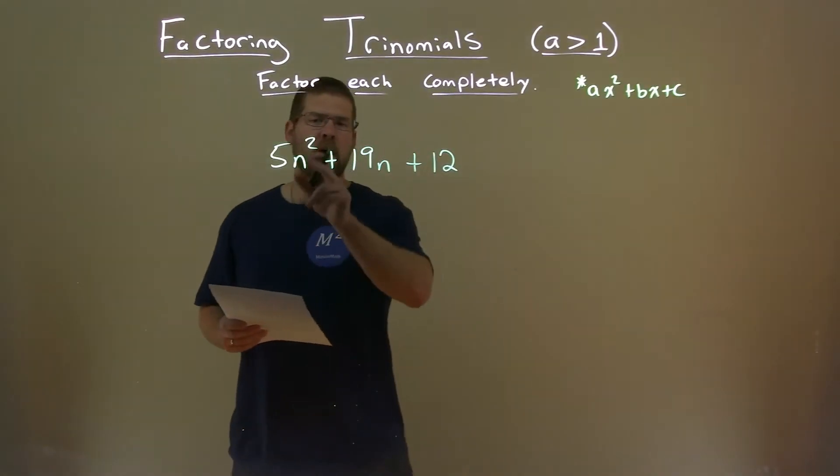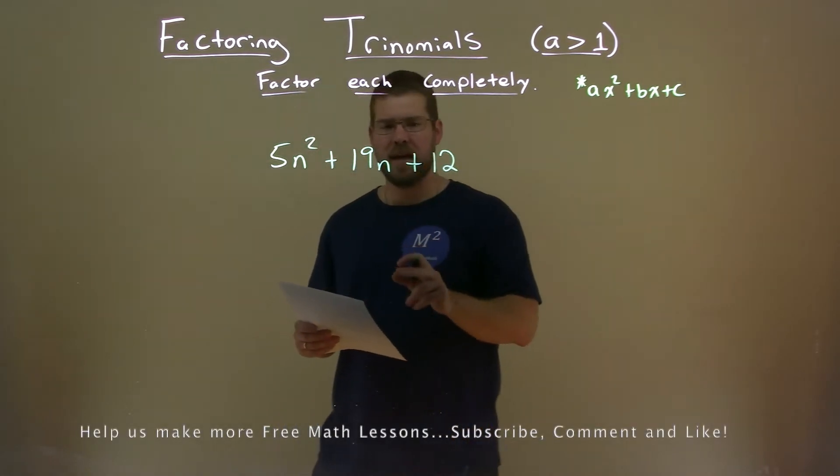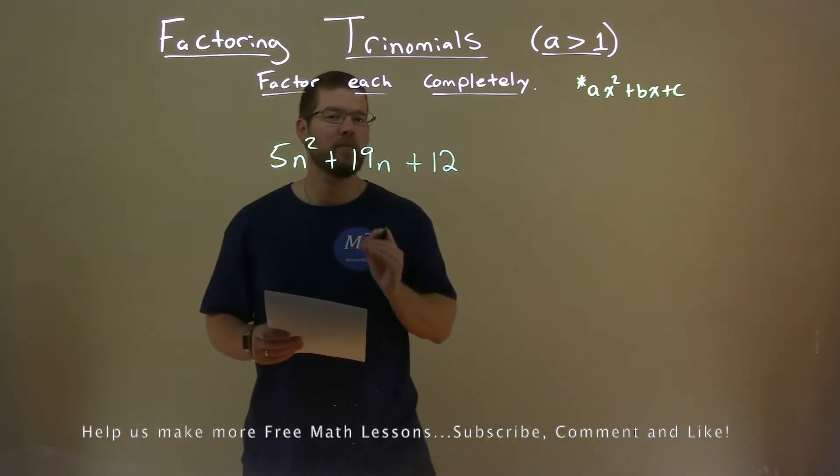We're given this problem here, 5n squared plus 19n plus 12, and we need to factor this completely.